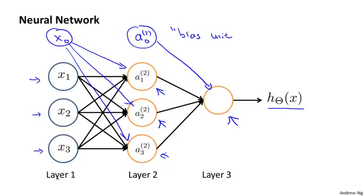To introduce a bit more terminology, in a neural network, the first layer, this is also called the input layer, because this is where we input our features, x1, x2, x3. The final layer is also called the output layer, because that layer has the neuron, this one over here, that outputs the final value computed by our hypothesis. And then, layer two, in between, this is called the hidden layer.